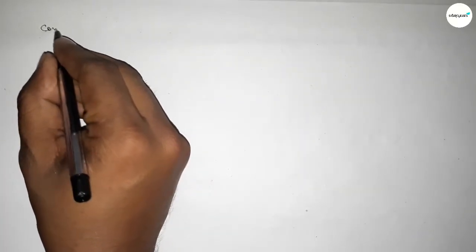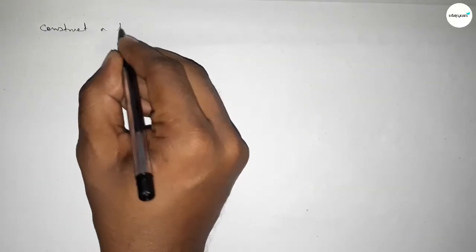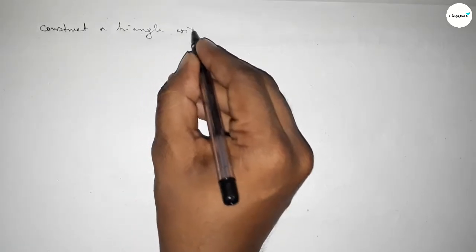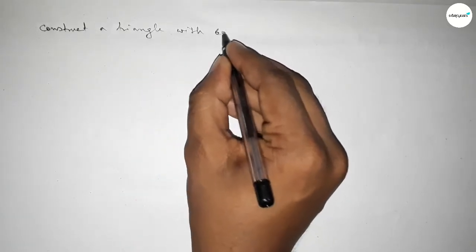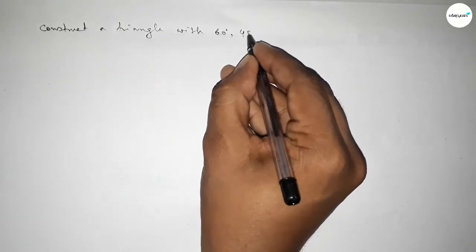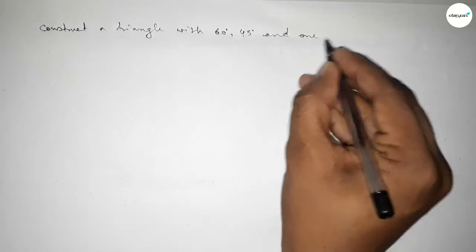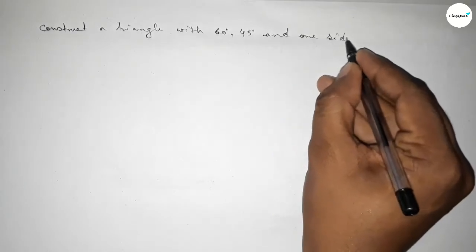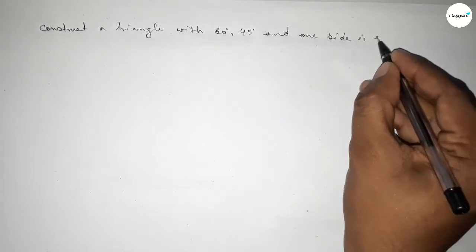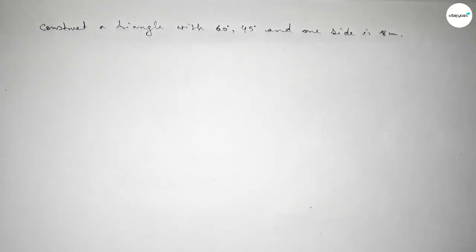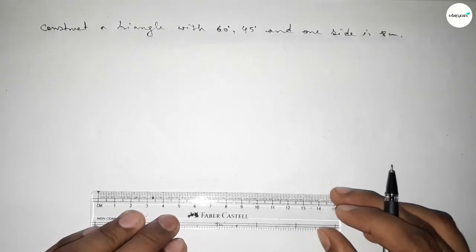Hi everyone, welcome to SSR Classes. Today in this video we have to construct a triangle with two given angles — 60 degrees and 45 degrees — and one given side of 8 centimeters. So let's start the video.